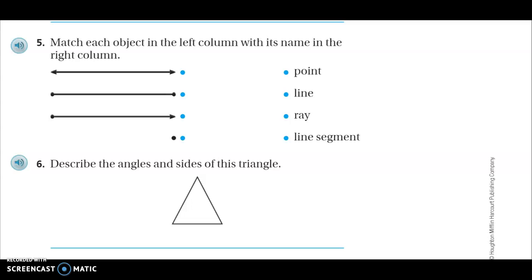Number five. Match each object in the left column with its name in the right column. So you might not remember these. You might have to go back earlier into your unit and refresh. What's a point, line, ray, and line segment? And then connect them. Press pause and work.